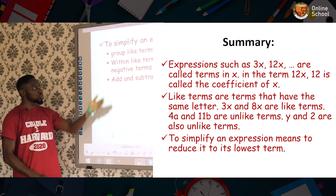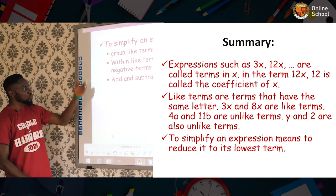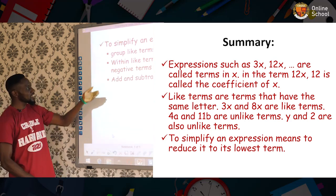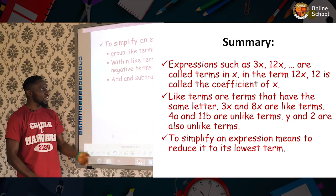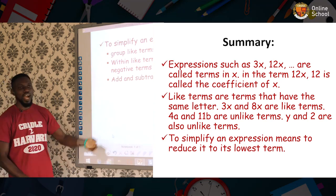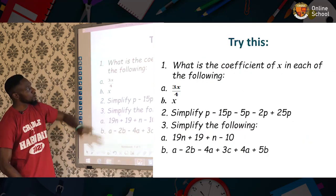And then finally, we say to simplify an expression, you follow these steps. The first thing you do is that you group like terms together. Secondly, within like terms, group positive terms and negative terms together. And then finally, you add and subtract in the usual way. Finally, this is just an assignment.